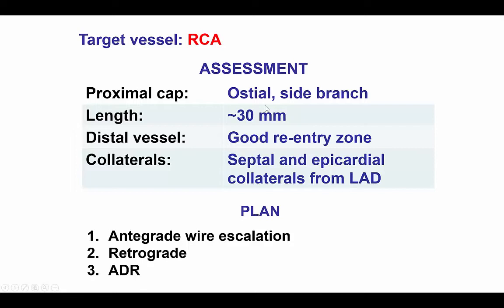The lesion was in the proximal right coronary artery. It was about 30 mm long. The distal vessel was of good quality, and there were both septal and epicardial collaterals from the LAD.